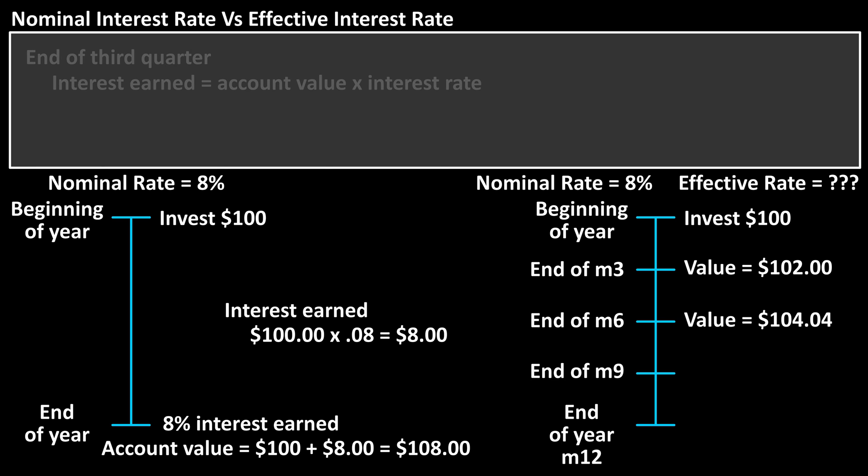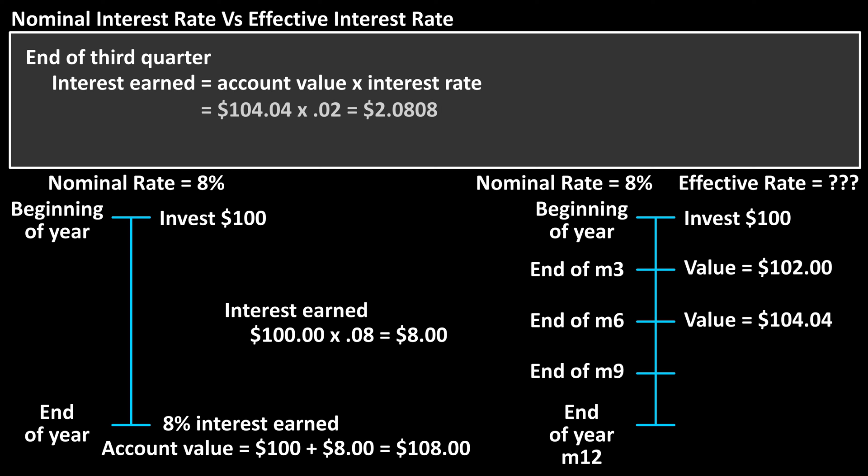Now for the end of the third quarter, after month 9, at the end of September, the interest earned will now be the $104.04 in the account times again 2% or 0.02, which equals $2.0808.